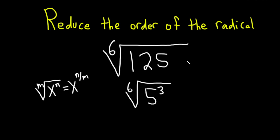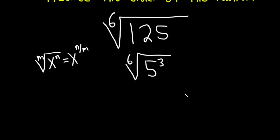So in this case, we can write this as 5 to the 3 over 6, 3 over 6, just like that.